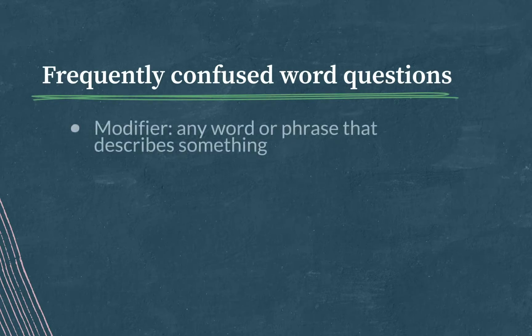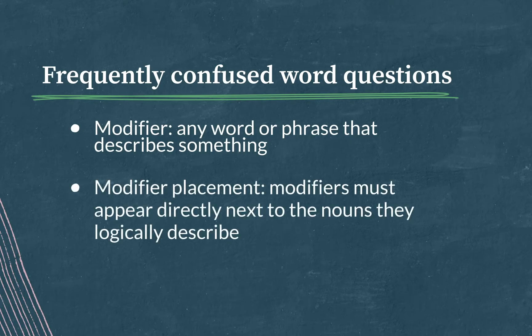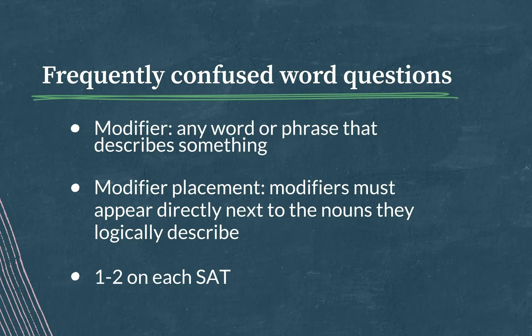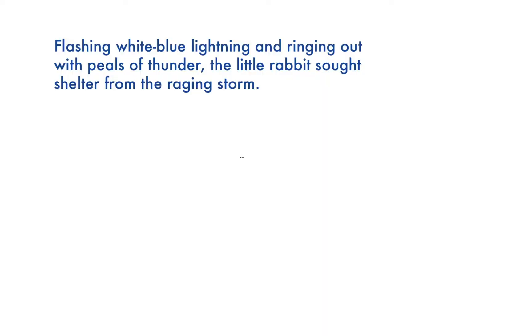A modifier is any kind of word or phrase that describes something. That can be adjectives like 'cheerful,' adverbs like 'hopefully,' or full phrases like 'after hearing a lineup of art critics.' The rule being tested by modifier placement questions on the SAT is that modifiers must appear directly next to the nouns they logically describe. You'll see one to two questions about modifier placement errors on test day.